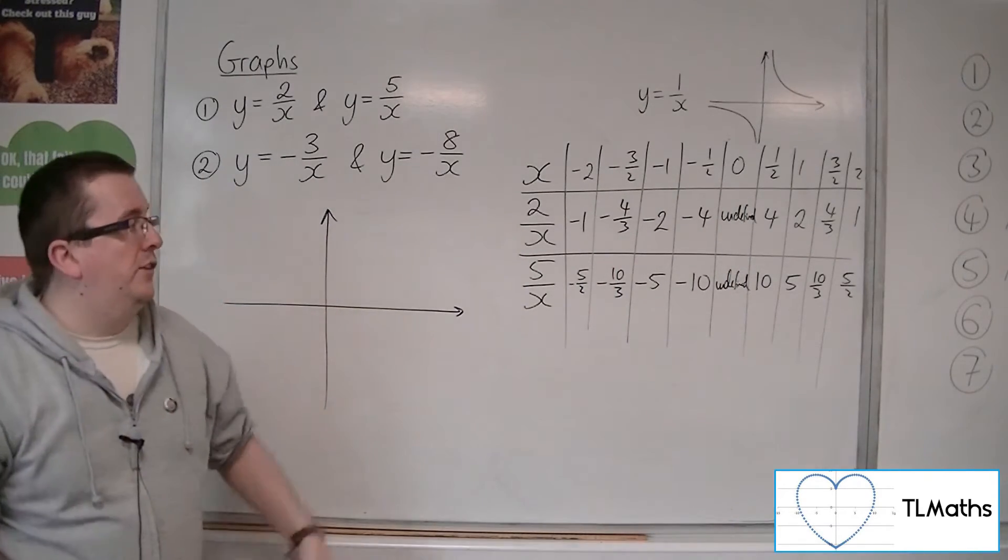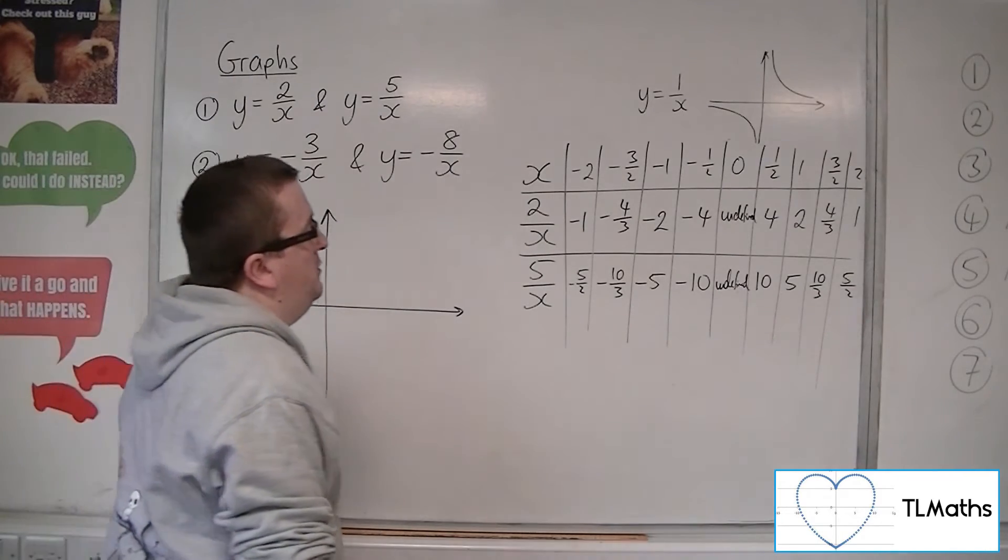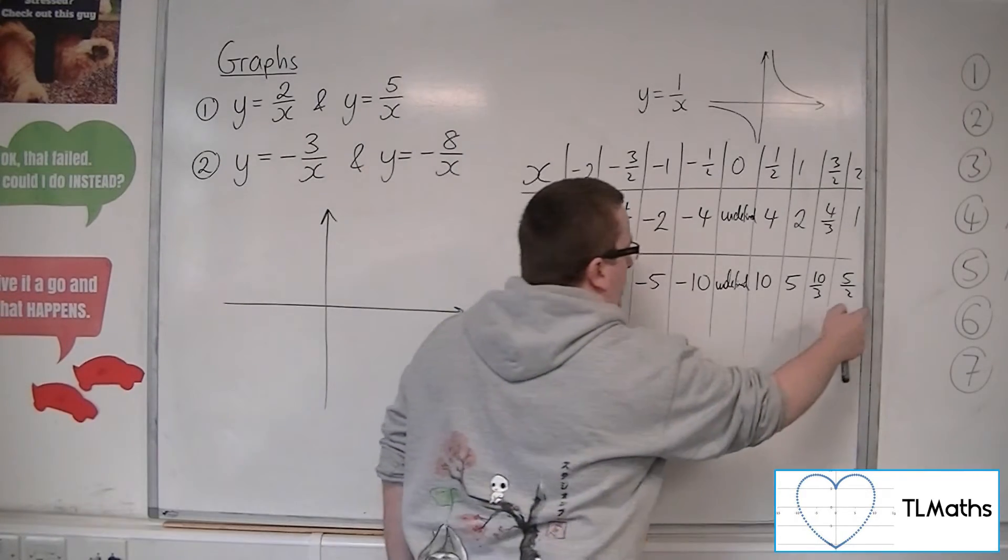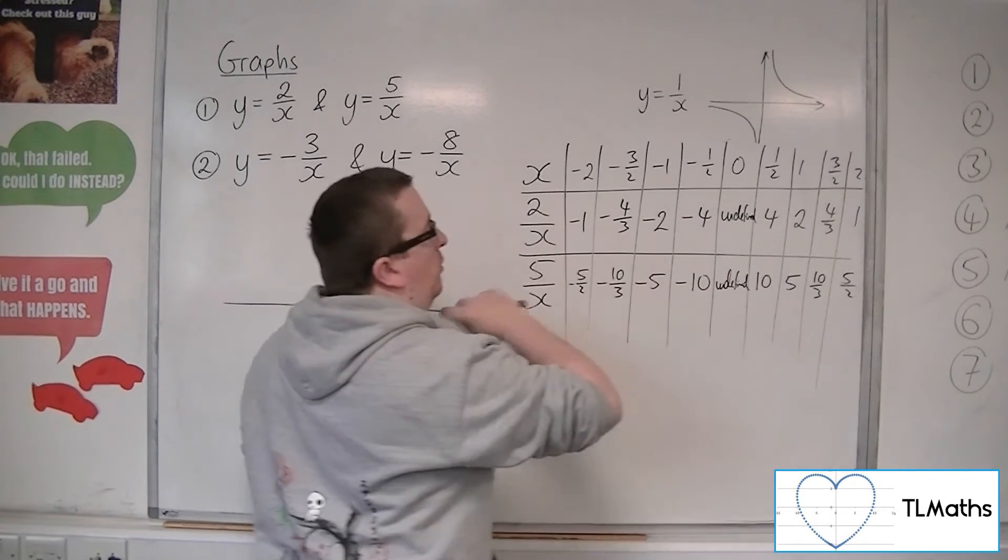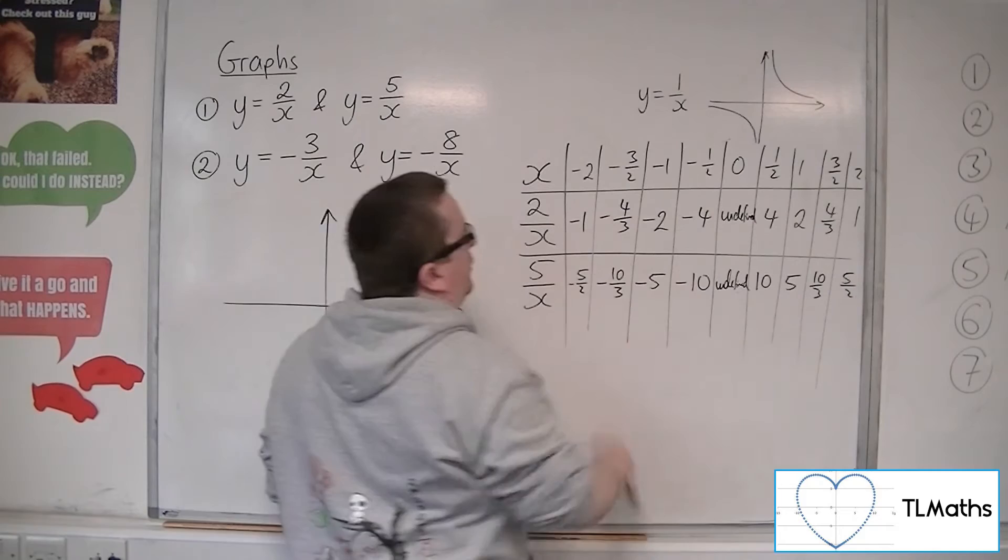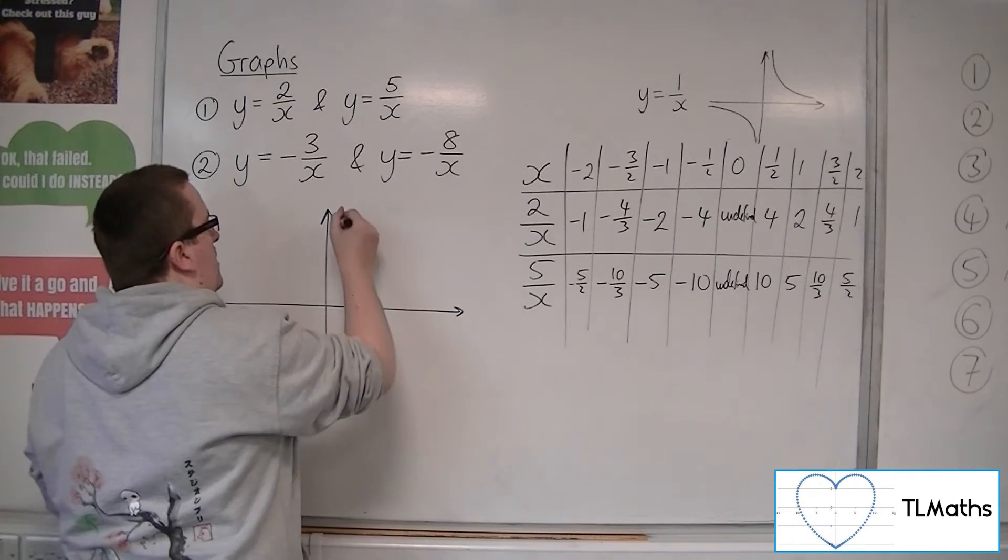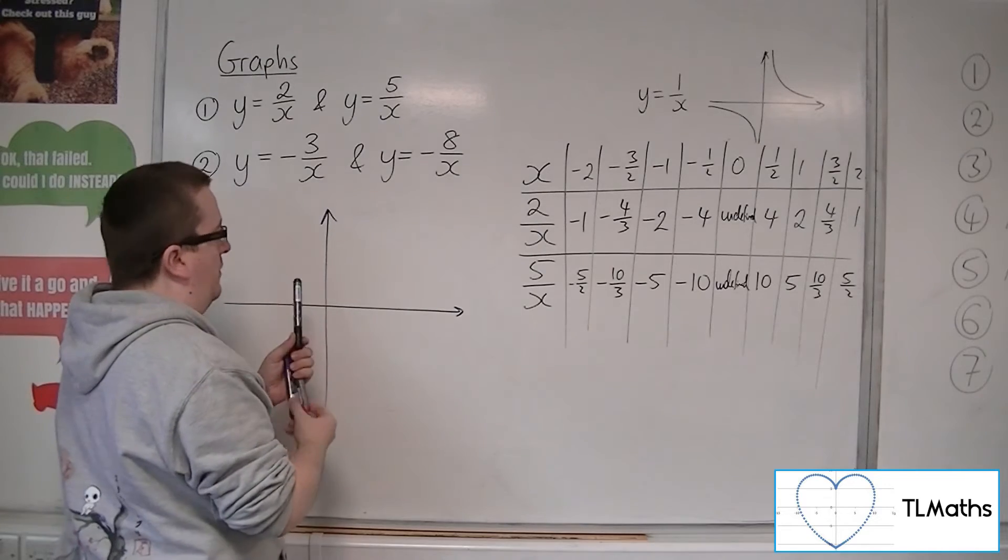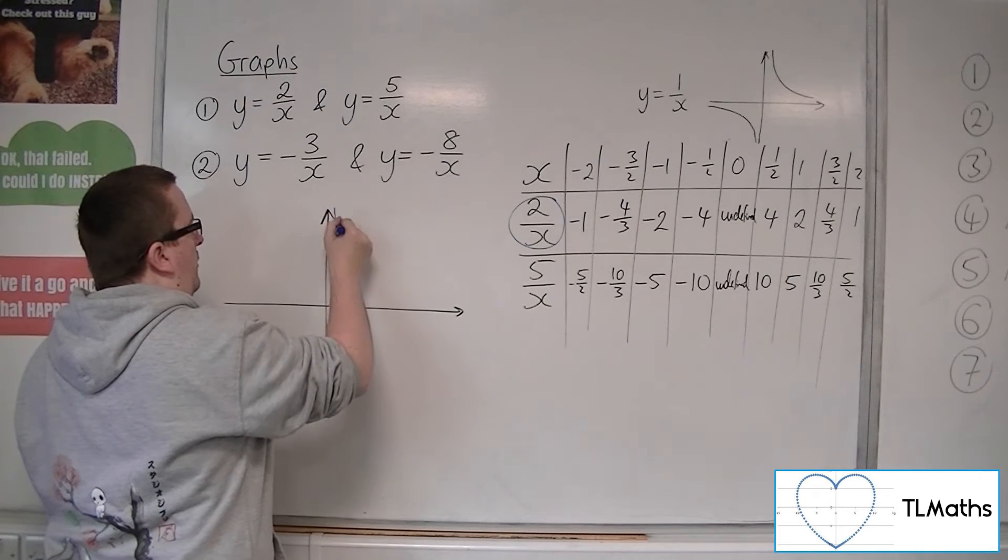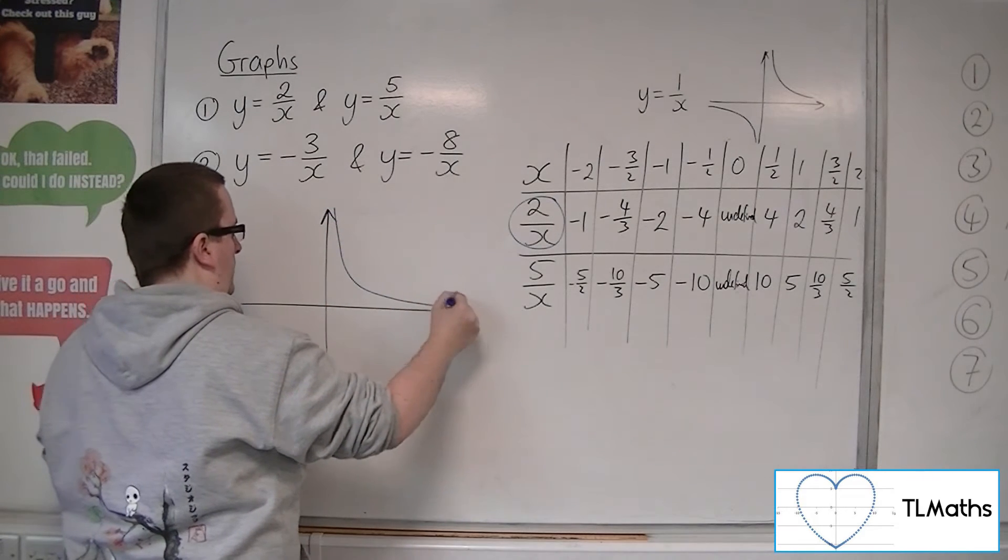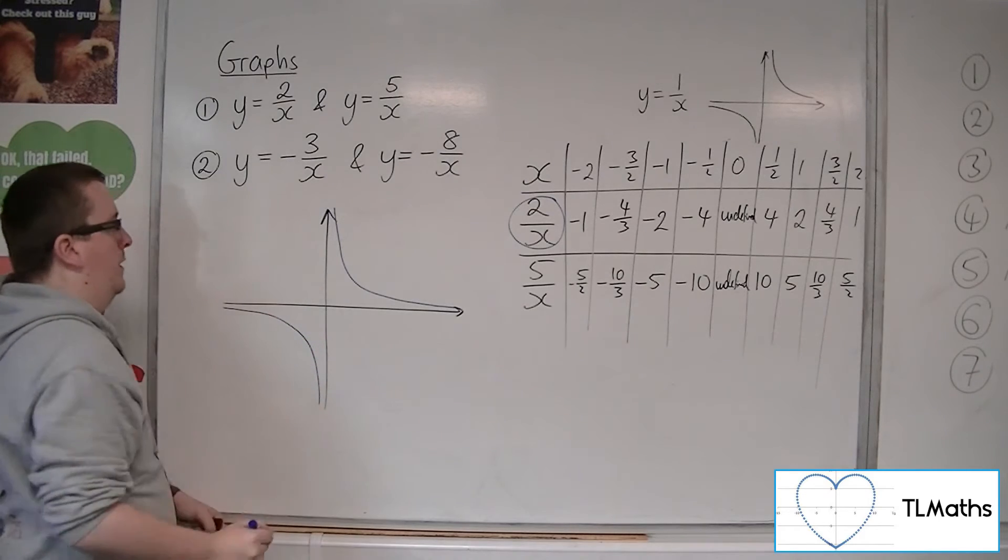So this is what it looks like. So these are the y values for each of the graphs. So you'll notice that the y values for the 5 over x are all greater than those for the 2 over x. So whereas 2 over x, if I draw that one in blue, whereas that one will look something like this.